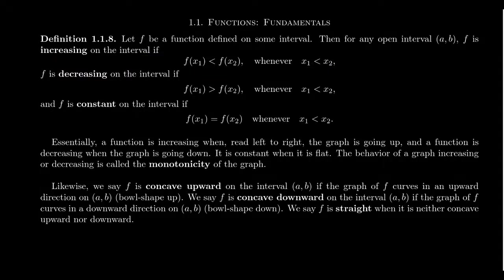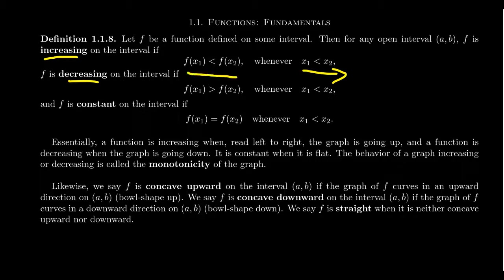Similarly, we say that the function f is decreasing when whenever x₁ is less than x₂, that implies that f(x₁) is greater than f(x₂). The difference between increasing and decreasing is that as you move left to right — saying x₁ is less than x₂ on the x-axis means you're reading to the right, just like we read books in English. So as you read the graph left to right, if the y-coordinates are getting bigger and going up along the y-axis, the function is increasing. Decreasing does the opposite: as you read the graph left to right, the function is actually getting smaller — the graph is going down.